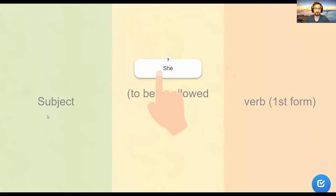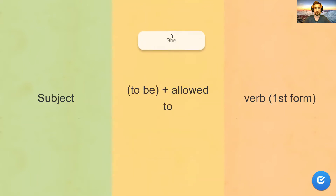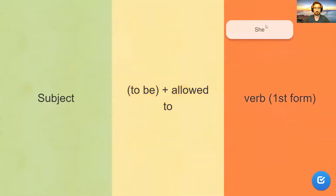Okay, let's do an exercise to get familiar with the word 'allowed to' and how to use it in sentences. You have a subject, the form of 'to be,' and 'allowed to,' and a verb. Now you have to put these words into the correct box.